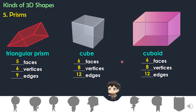Next kind of prism is cuboid or rectangular prism. Let's count the faces: one, two, three, four, five, six. Cuboid has six faces.